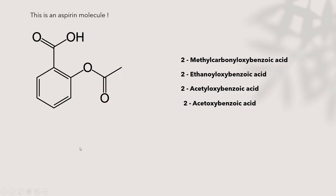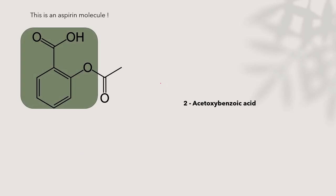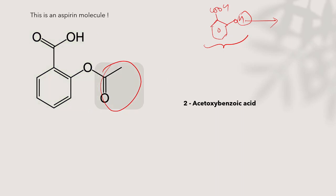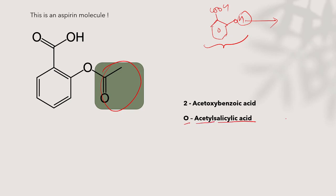There's another way to name aspirin. If you see the branch is only the acetyl group and the acid is salicylic acid, then at the oxygen of salicylic acid there is an acetyl substituent. So it can also be named 'O-acetylsalicylic acid.' Aspirin is the most common name, but both '2-acetoxybenzoic acid' and 'O-acetylsalicylic acid' can be used.